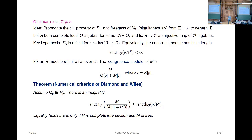Of course, the interesting thing is that both the congruence module and the cotangent module have number-theoretic interpretations in this context. But anyway, this is an abstract criterion from commutative algebra for detecting complete intersection and freeness.